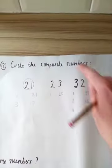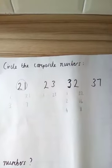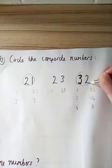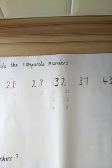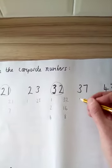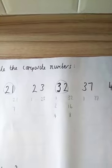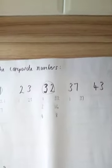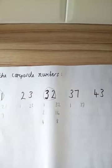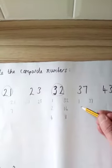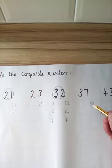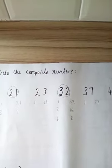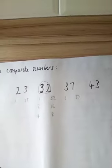37: 1 times 37 makes 37. Are there any other ways of making 37 using multiplication? No. So 37 only has the factors 1 and 37, the two factors 1 and itself. So therefore it is a prime number. And the final, 43: we know has the factors 1 and 43.